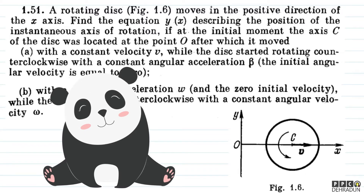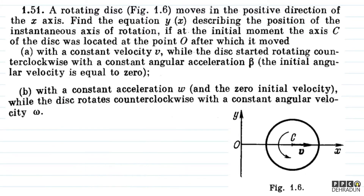The question says: a rotating disk moves in the positive direction of the x-axis. Find the equation y as a function of x, describing the position of the instantaneous axis of rotation. If at the initial moment, the axis c of the disk was located at the point O, after which it moved with a constant velocity v, while the disk started rotating counterclockwise with a constant angular acceleration beta.